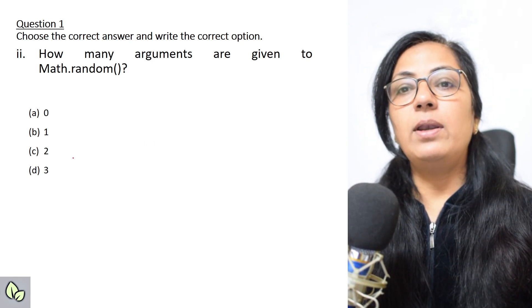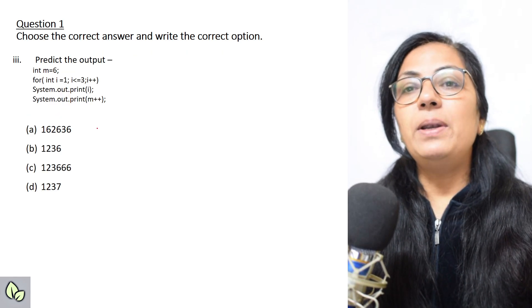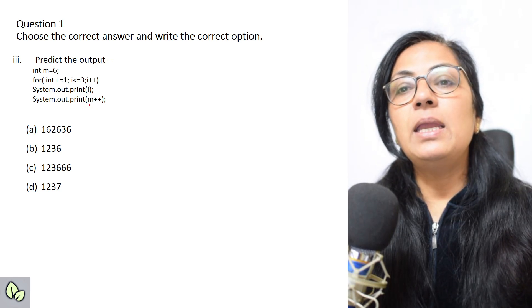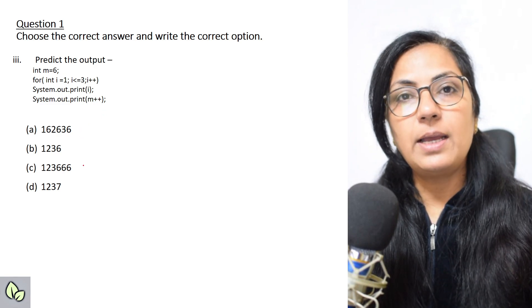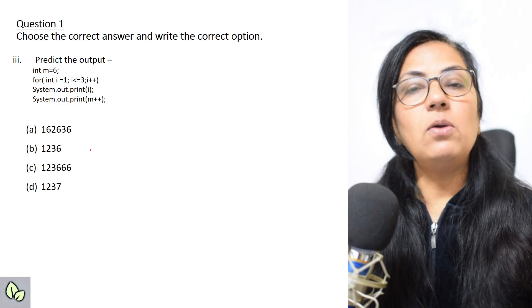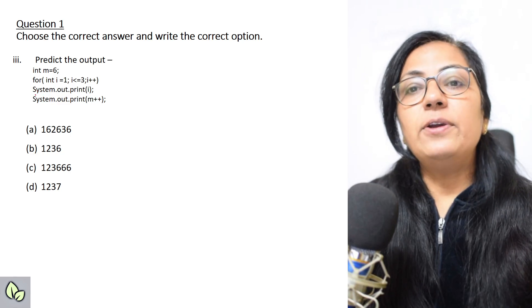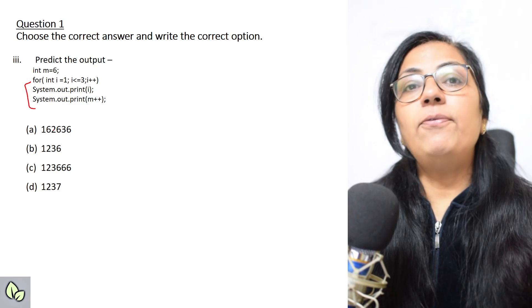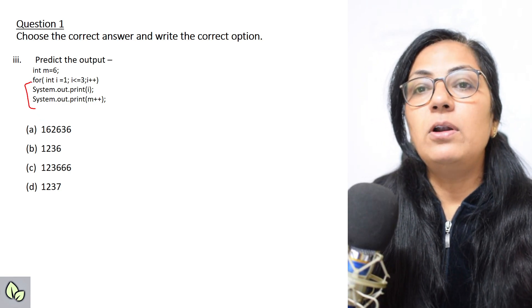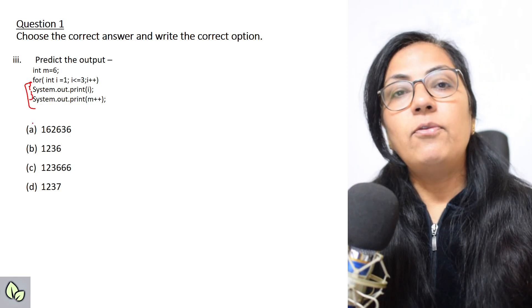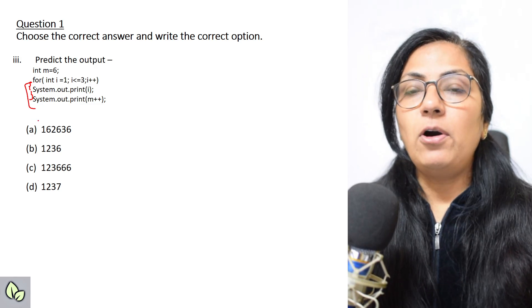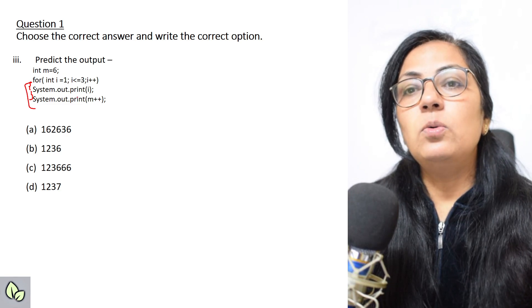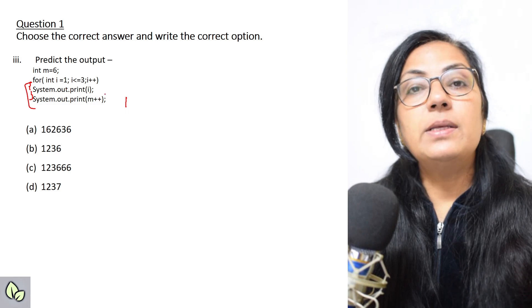The next question: predict the output. Int m equals 6. For int i equals 1, i less than equals 3, i plus plus, print i and print m plus plus. Please pause the video, check your answer, and then continue. Now here, if you notice, after for, two statements are given but these two statements are not enclosed within curly braces. So by default, only one statement will be there for that particular block. Only one statement is there for this for body.